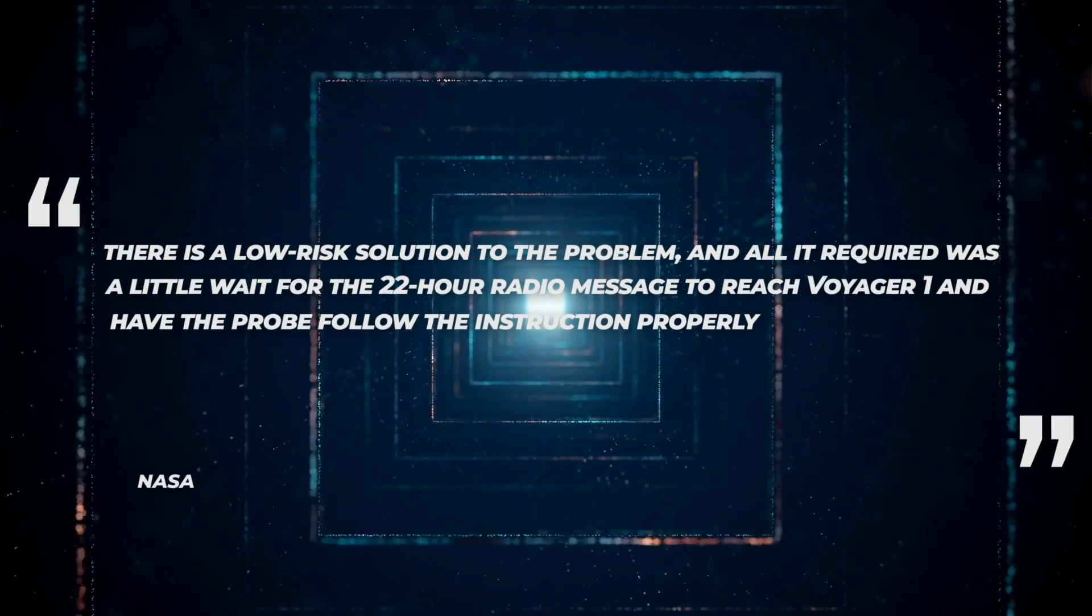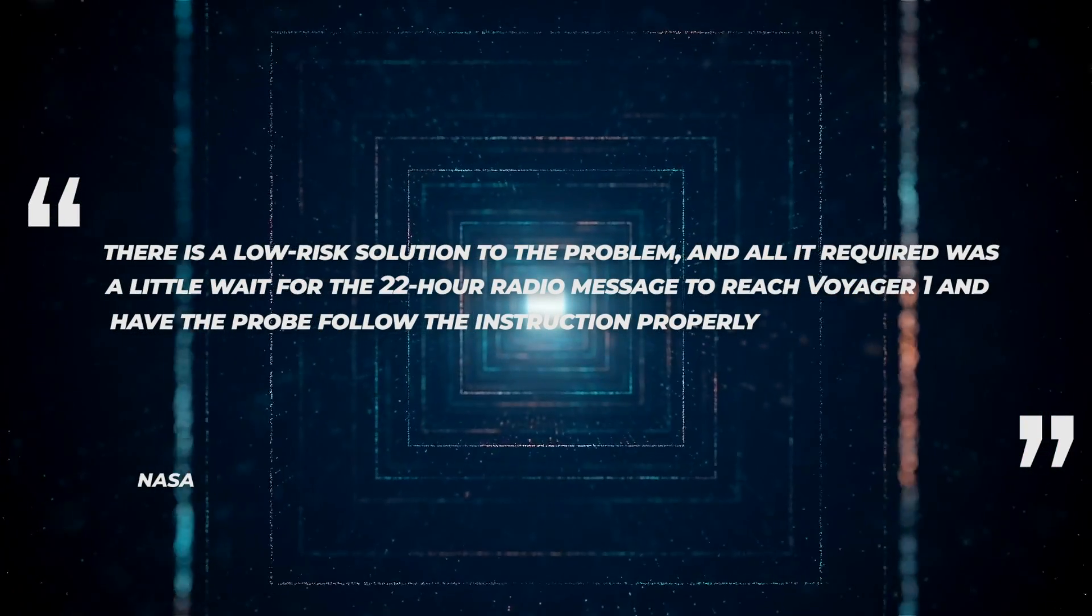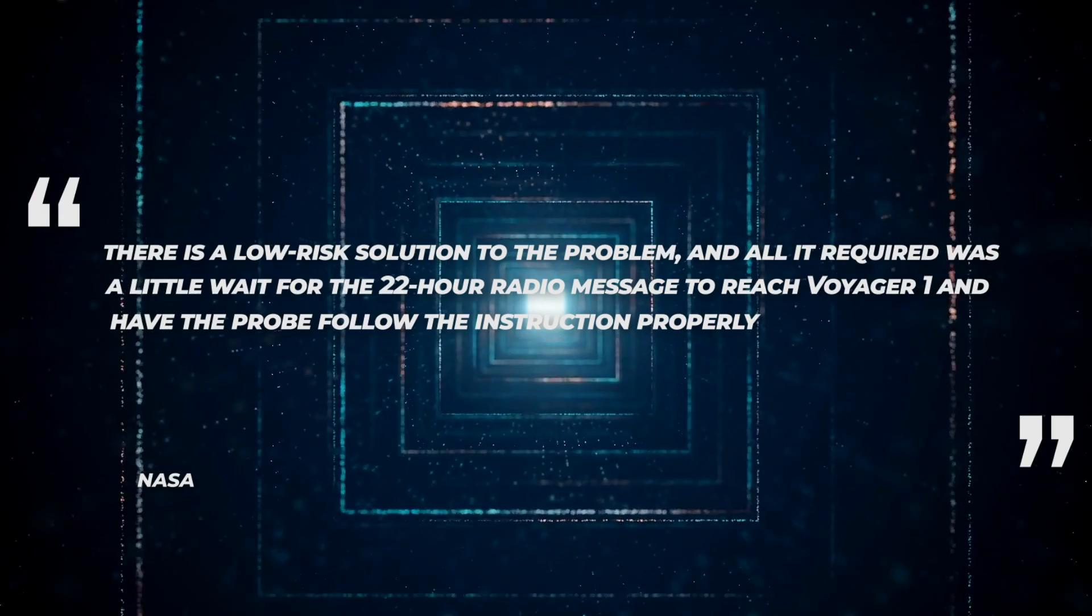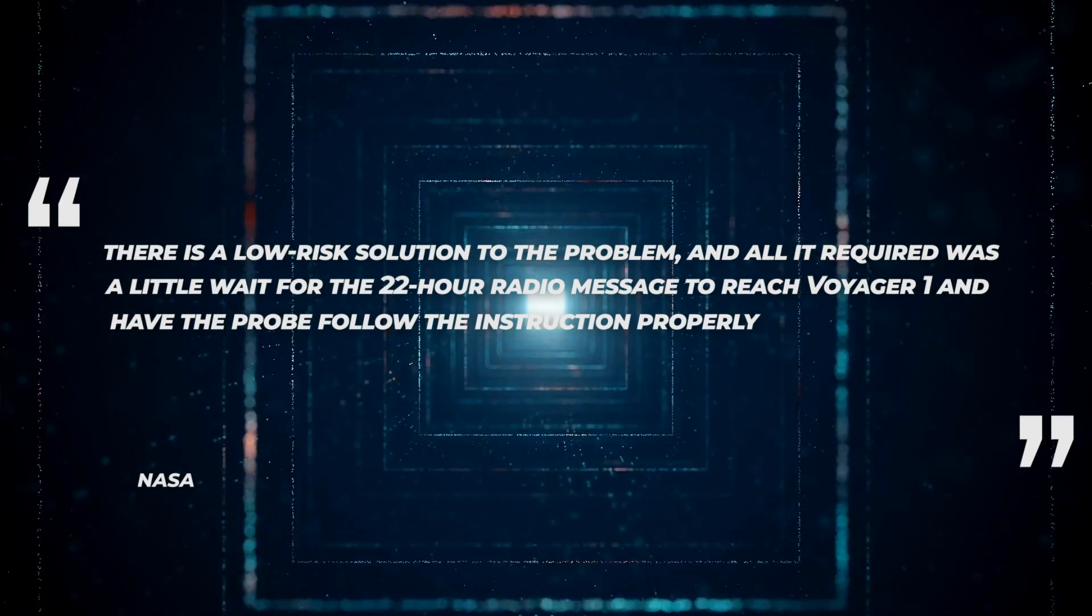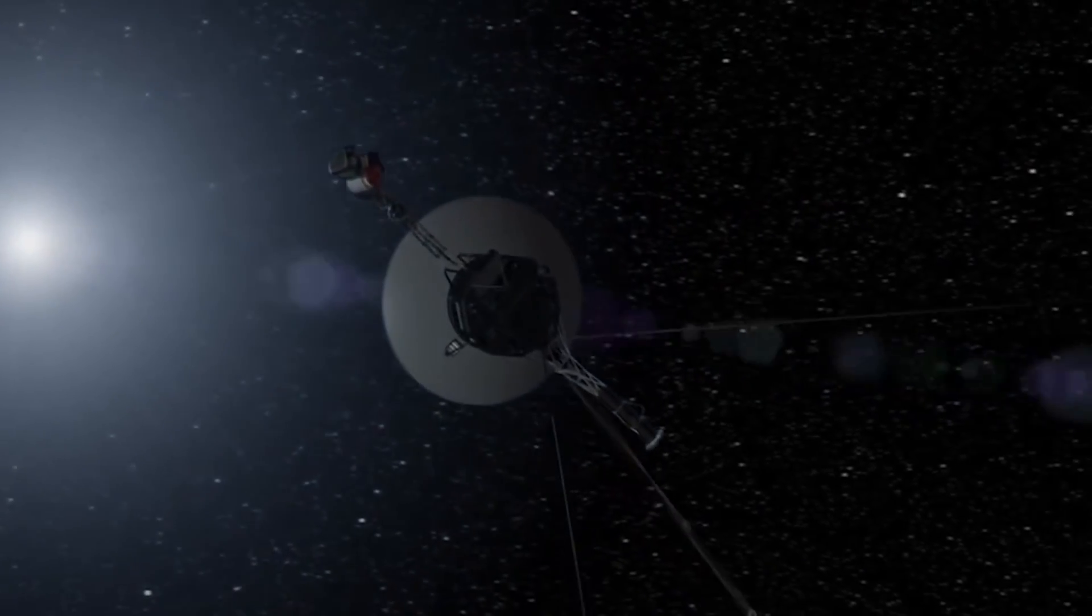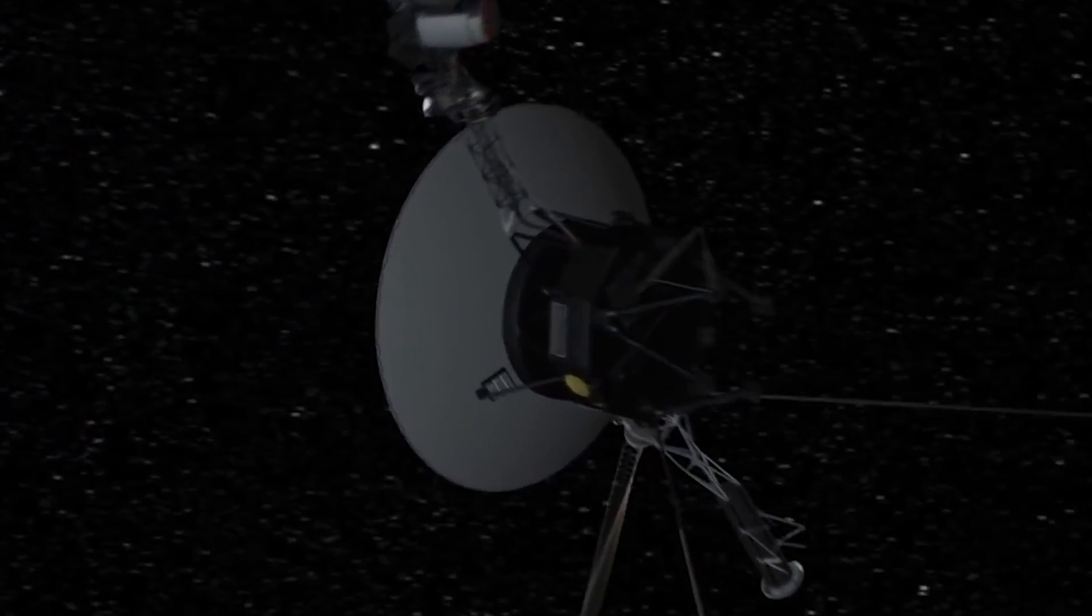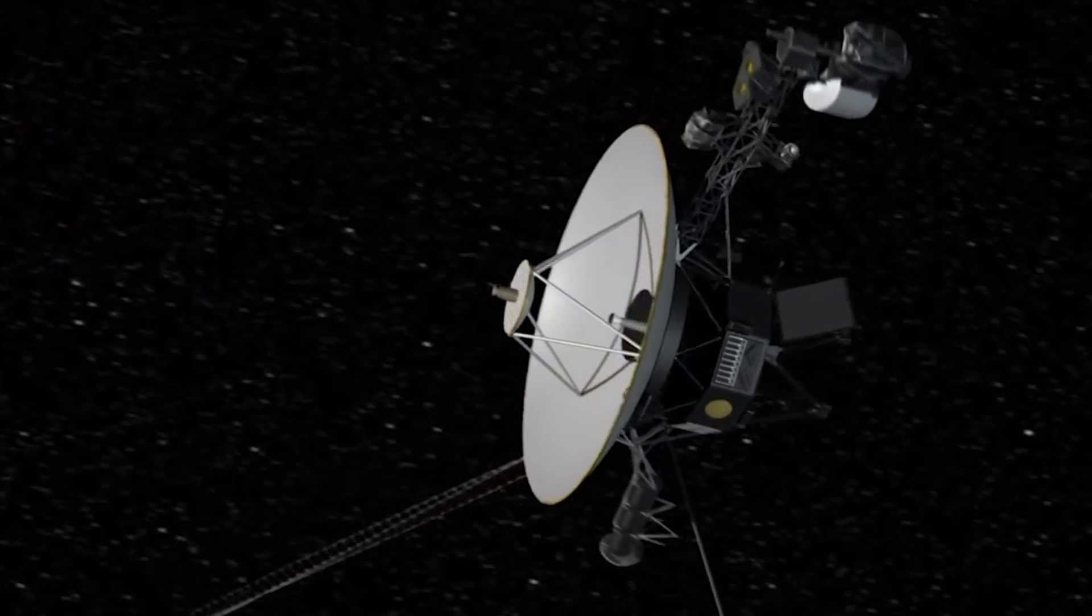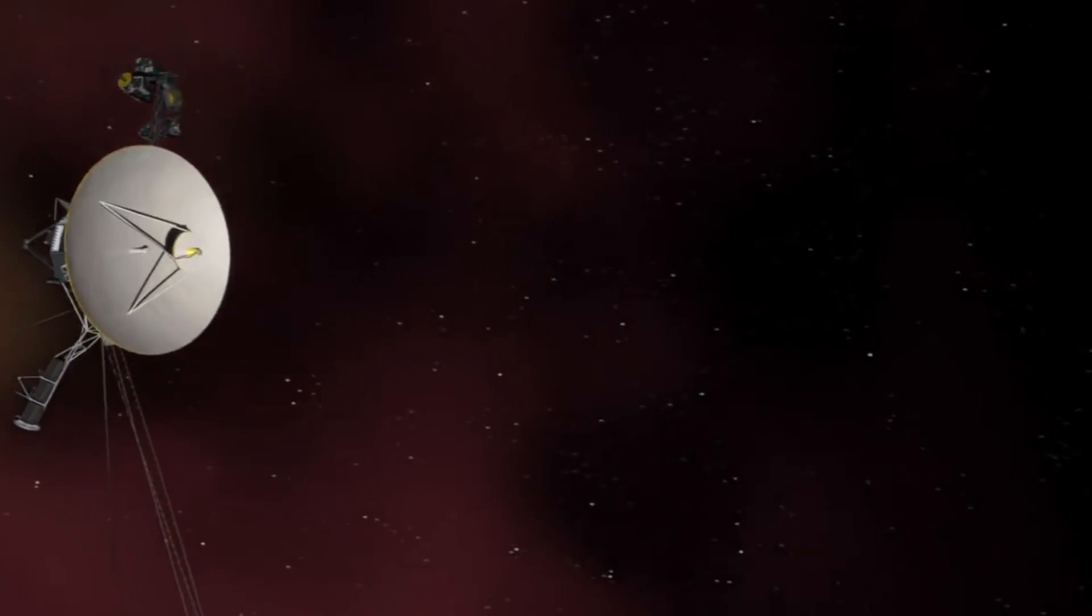According to NASA, there is a low risk solution to the problem, and all it required was a little wait for the 22-hour radio message to reach Voyager 1 and have the probe follow the instruction properly. However, now that the data issue aboard Voyager 1 has been addressed, it remains unclear what drove the probe to switch from its usual computer to a dead computer that has been out of service for years.